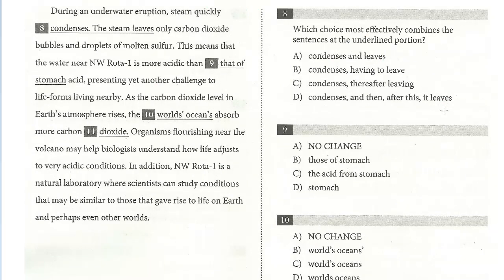We have 11 questions, so three more on this first passage. During an underwater eruption, steam quickly condenses. The steam leaves open carbon dioxide bubbles and droplets of molten sulfur. We want to effectively combine the two — it looks awkward to repeat 'steam' twice. You can condense these without repeating. We want parallel structure: 'condenses and leaves.' We're joining with 'and.' You wouldn't say 'condenses and then having to leave' — you want to be parallel. So the steam quickly does two things: it condenses and leaves only carbon dioxide. That one wasn't too difficult.